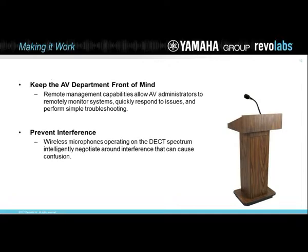A lot of people in IT think they can handle this, but it's important to talk to the AV department and keep them in mind. As AV and IT converges, there are lots of ways in which AV can benefit from IT. A lot of equipment now — whether a microphone or a control system — can be on the network, which helps the AV administrator remotely monitor systems and quickly respond to issues. In the university world, you might have 15 rooms across an entire campus, whereas in an office you might have one building with 15 floors. The AV team having the capability to remotely manage equipment is absolutely vital.